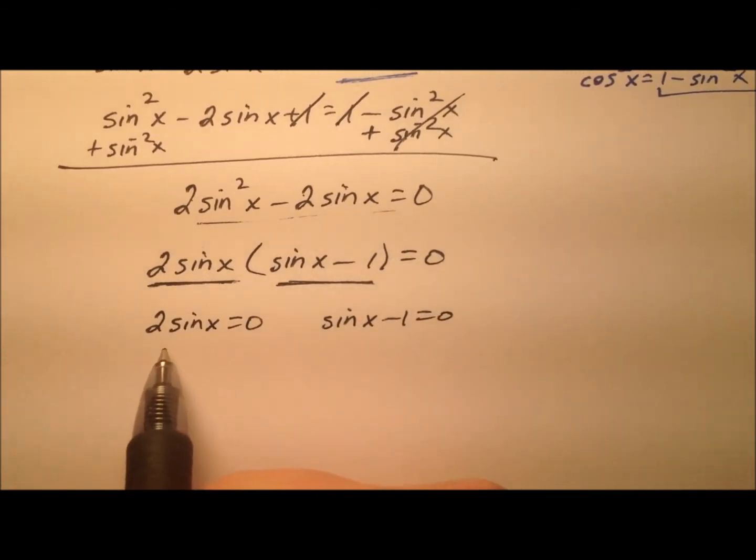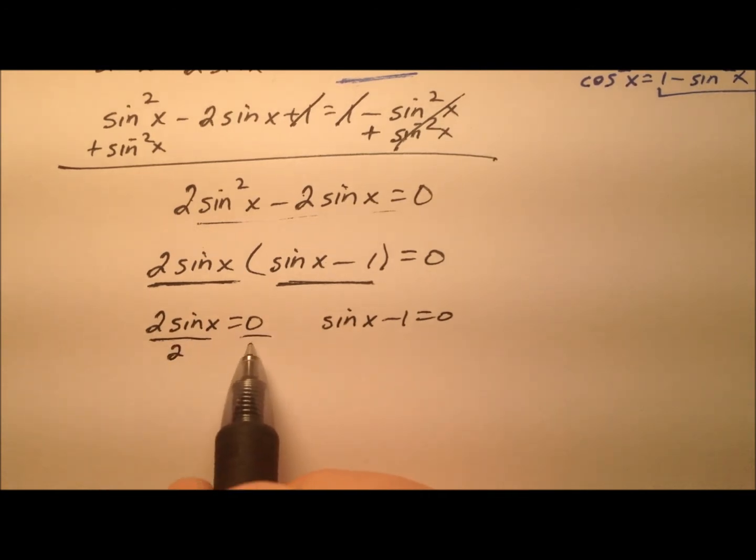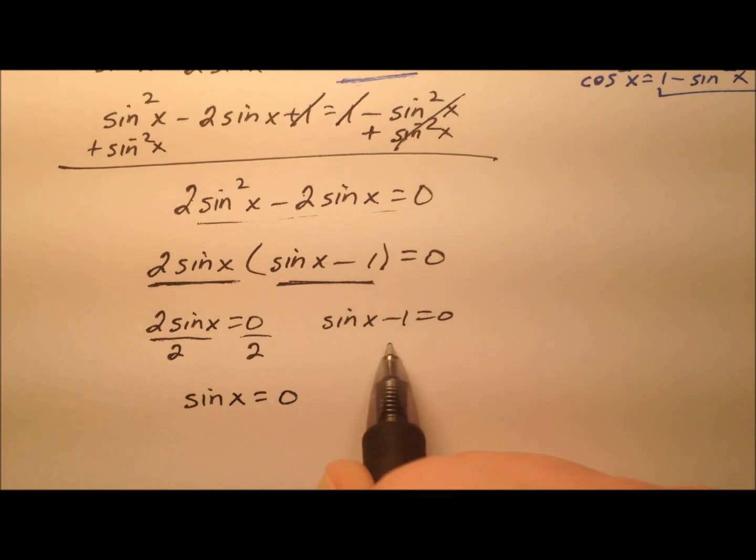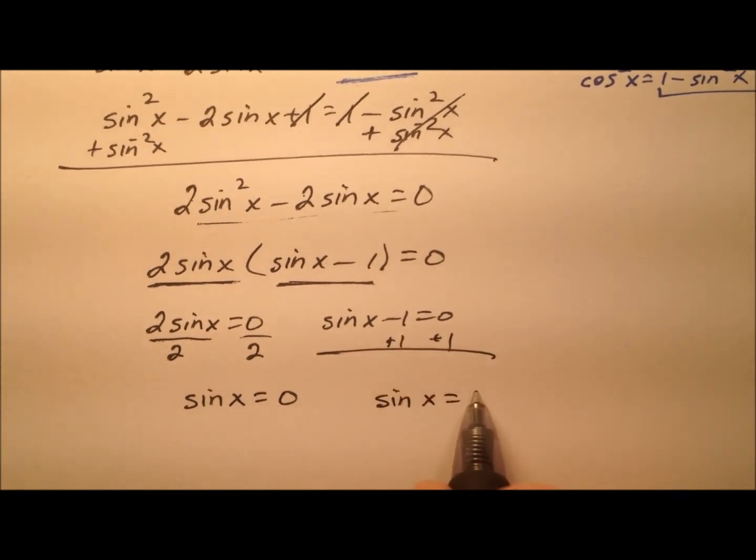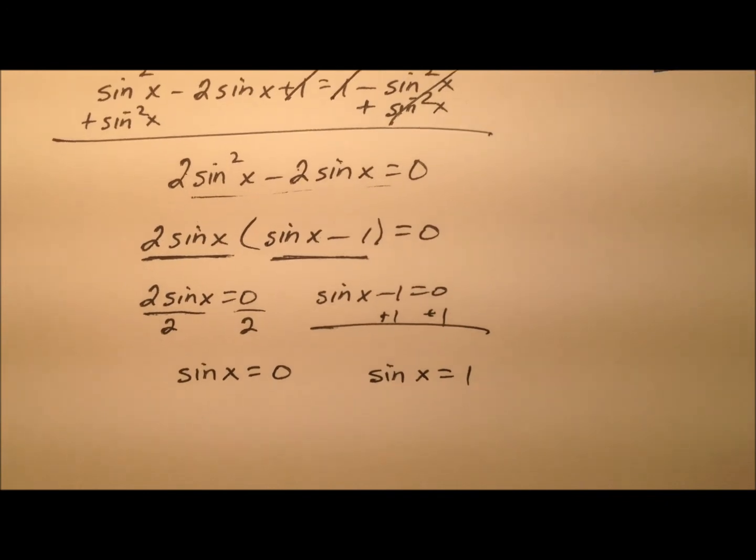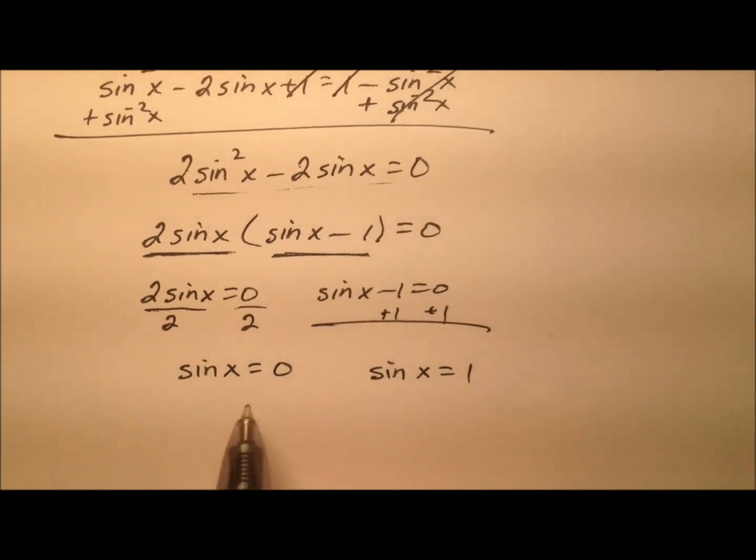So solving these equations, over here we'll divide by 2 and we'll see that sine of x equals 0, and over here we'll add 1 to both sides, so we have sine of x equals positive 1. Where does the sine of x equal 0? Well, that occurs at 0 degrees and 180 degrees.